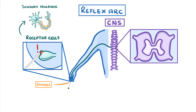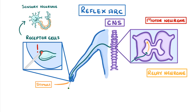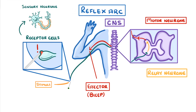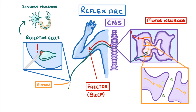Here, inside the spinal cord, it will transfer the impulse to a relay neuron, shown here by this yellow arrow. The relay neuron will then pass the impulse along to a motor neuron, where it travels back out to the body to an effector such as your bicep, which will contract and move your hand away from the pin. Remember that between each of the different neurons there will be synapses, where the electrical signal is temporarily converted to a chemical signal, so that it can be passed between the different nerve cells.